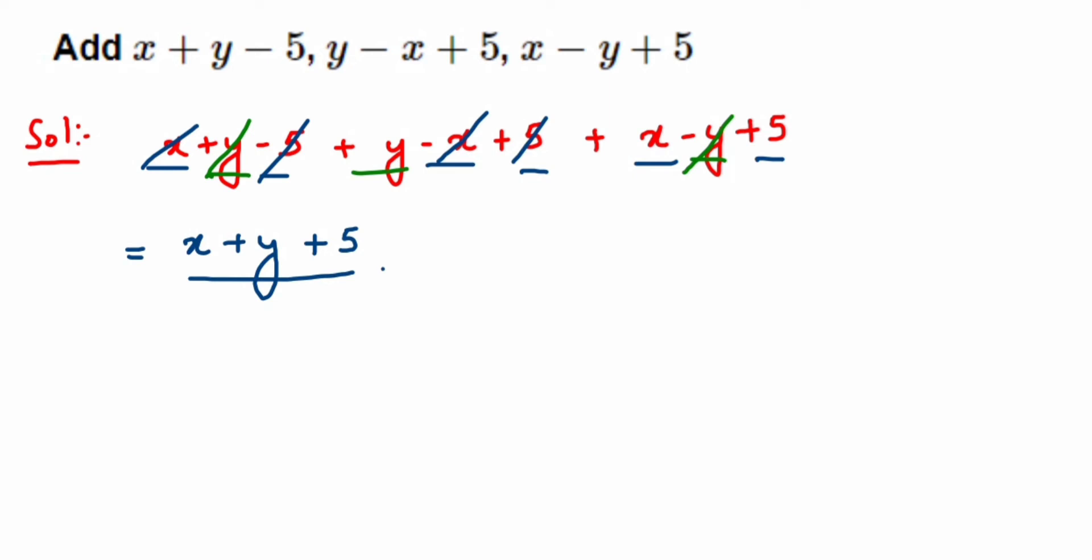The column method means placing the expressions vertically. This is the second method, so you can follow whichever is easier for you. The first expression is x plus y minus 5.